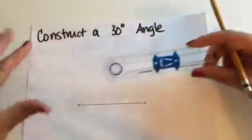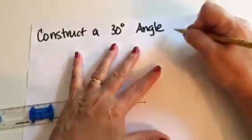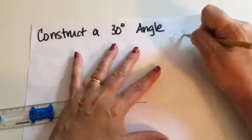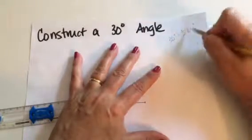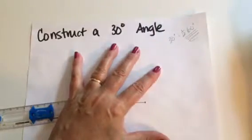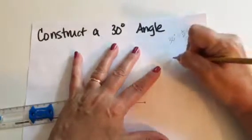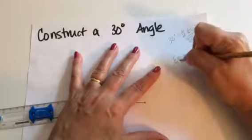Okay, the first thing I'm going to do is a little bit of brain work. I realize that 30 degrees is equal to one-half of 60 degrees. So I'm thinking to myself, where can I find a 60-degree angle? And the answer to that is in an equilateral triangle.